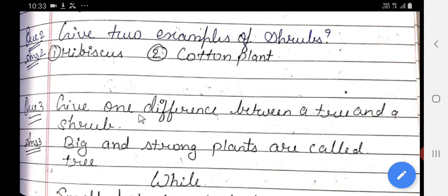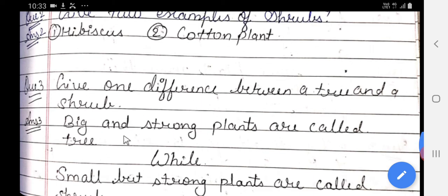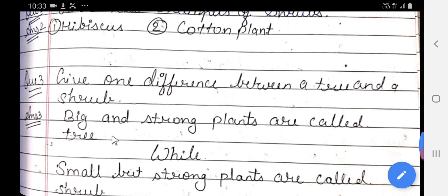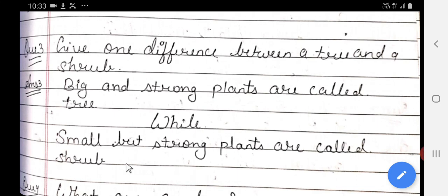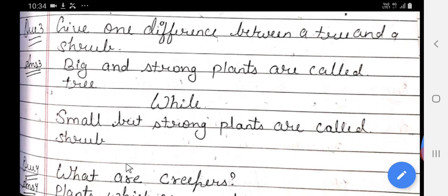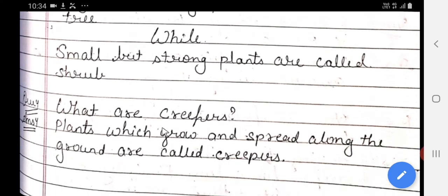Tree and shrub. Big and strong plants are called tree. While small but strong plants are called shrub. What are creepers?